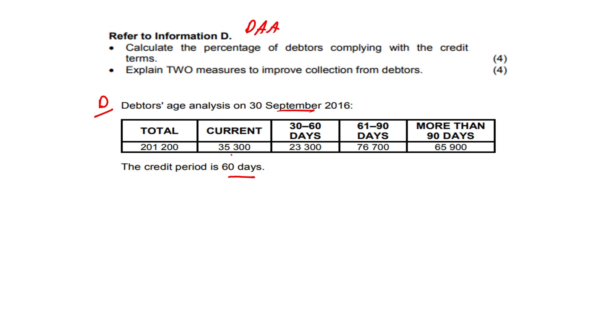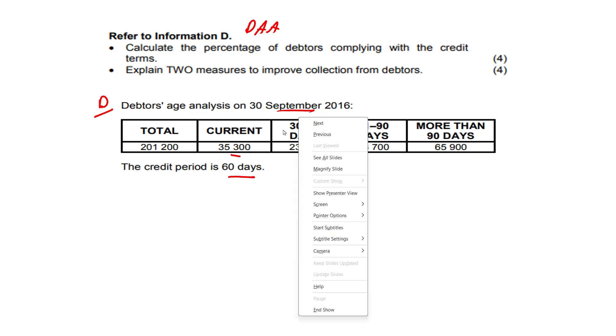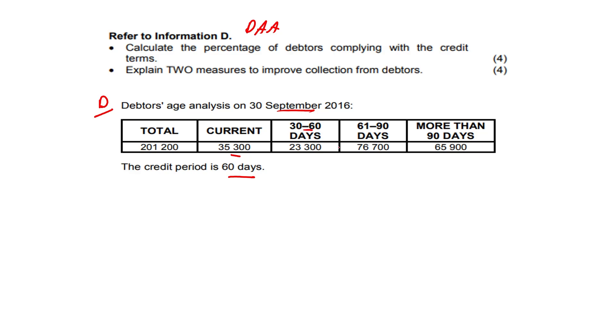Current — yes, $23,300 — and 30 to 60 days. So these debtors are complying with the credit terms.